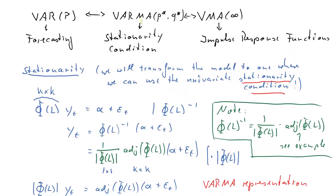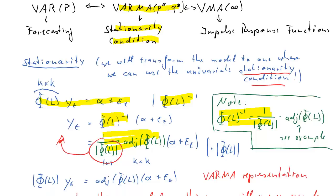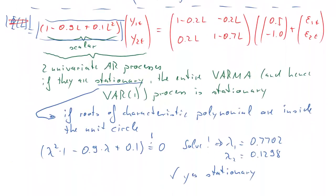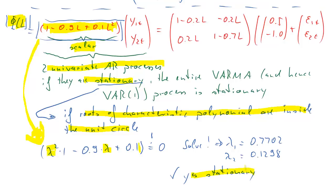Let's recap what we did. We wanted the VARMA representation to derive the stationarity condition. We started from the VAR(P), divided by the inverse of the polynomial, brought the determinant to the left-hand side, and got our VARMA representation. We then needed to decide whether the univariate ARMA processes are stationary — we needed the determinant of the lag polynomial, which is a scalar. That gave us univariate processes and we applied the same criterion as always for univariate processes.